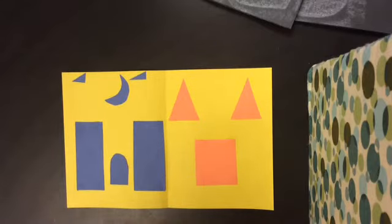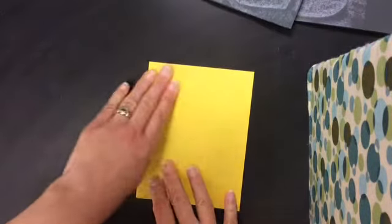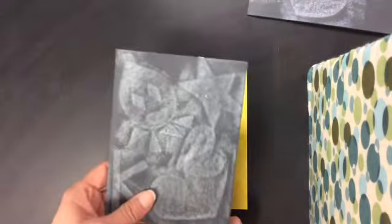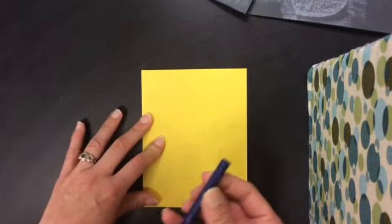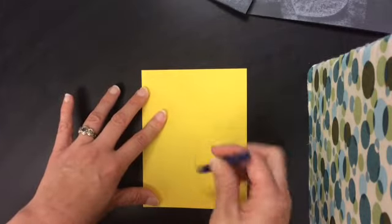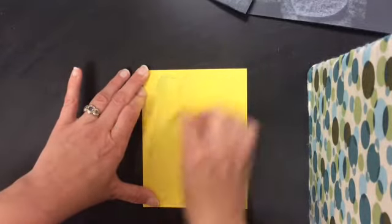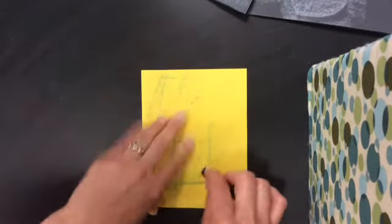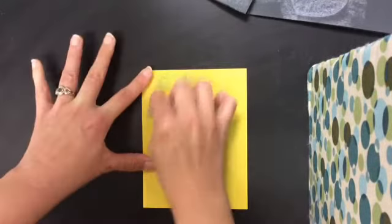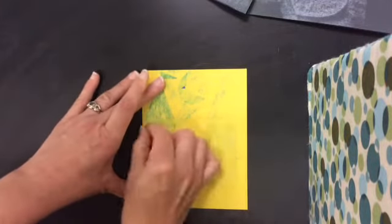But now it's time to reveal the secret picture. So I close it, and then using a darker color than my paper, or if I'm using dark paper, I would use a lighter color crayon that's been peeled. I'm going to put it on its side, not like I'm coloring with it, on its side, and then I can start to reveal the picture. I can go all over the whole thing to reveal my secret code collage.